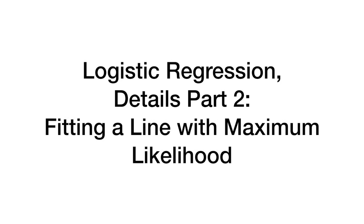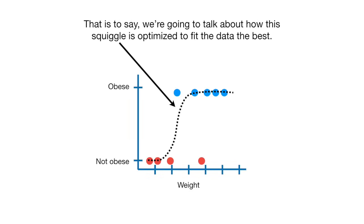Today, we're going to follow up on our series of videos on logistic regression. This time, we're going to talk about fitting a line using maximum likelihood. That is to say, we're going to talk about how this squiggle is optimized to fit the data the best.